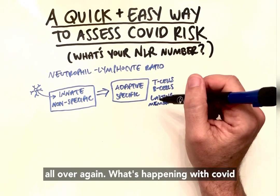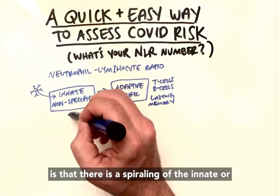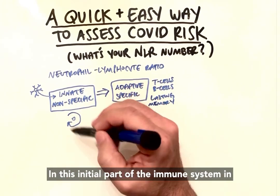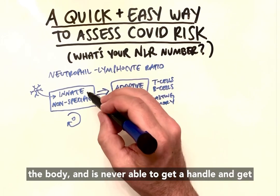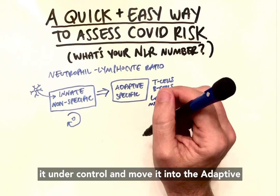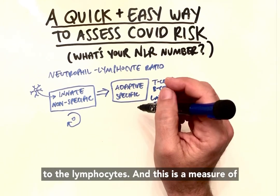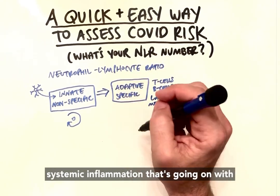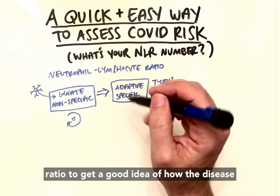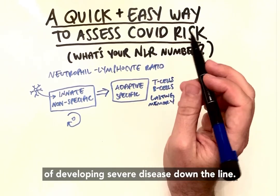What's happening with COVID is that there is a spiraling of the innate or non-specific immune response — a spiraling of inflammation — and the body is never able to get it under control or move into the adaptive immune response. There's an increase in neutrophils relative to lymphocytes, which is a measure of systemic inflammation. Hospitals are using this NLR ratio to assess how the disease is progressing and the patient's risk of developing severe disease.